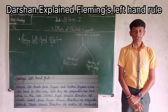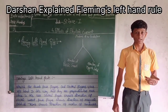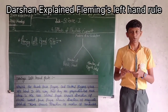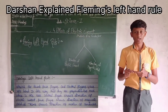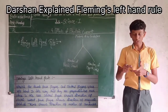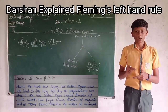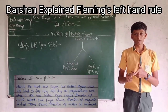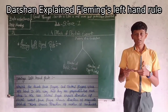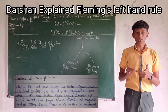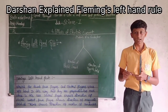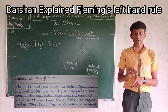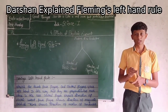Okay. Then explain Fleming's left hand rule. Fleming's left hand rule: stretch the thumb, forefinger, and middle finger of your left hand such that they are perpendicular to each other. The forefinger shows the direction of the magnetic field, the middle finger shows the direction of electric current, and the thumb shows the direction of motion of the conductor or the force on the conductor.